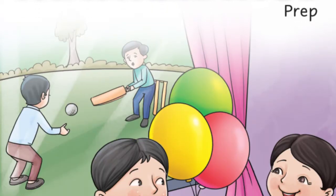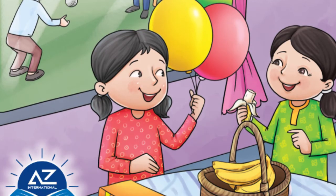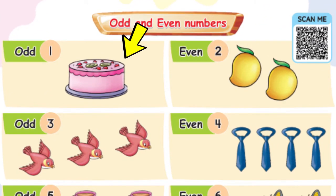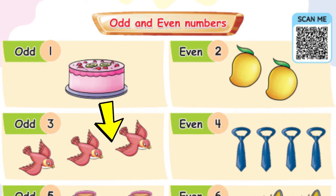Mathematics prep: odd and even numbers. Dear kids, look at the given picture — this is one cake and we cannot arrange this cake into pairs. Now look at this picture: there are two mangoes, and we can arrange these mangoes in pairs. Now look at the other picture: there are three birds. These three birds cannot be arranged in pairs, because a pair means a group of two objects.